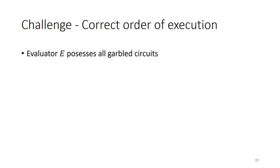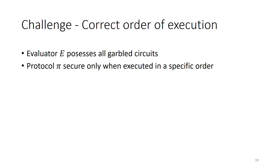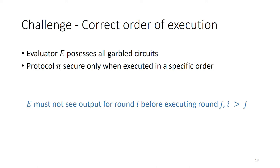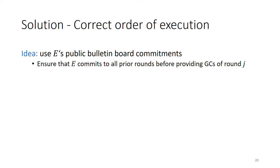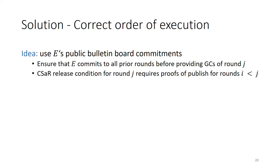This ensures that there is only a single message for which any evaluator will receive the keys. Another issue related to the non-interactive nature of our protocol is that the evaluator could retrieve the garbled circuits and execute these out of order. This is clearly something that would not happen in the original interactive protocol, where honest parties follow exactly the predefined order of execution. So we must ensure that the evaluator does not see the output for some round i before it fixes its execution for all rounds j which come before i. This is again solved using the commitments and carefully constructing the CSAR release conditions — specifically, to release garbled circuits of a certain round, the evaluator must prove that it already committed to the outputs of all prior rounds.